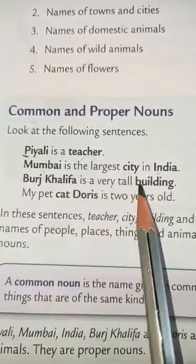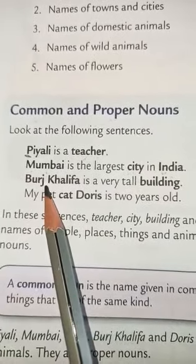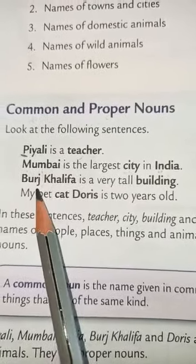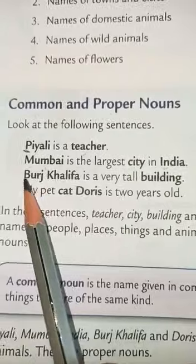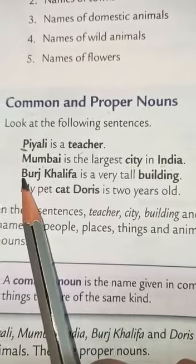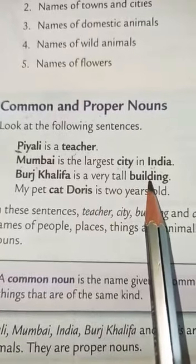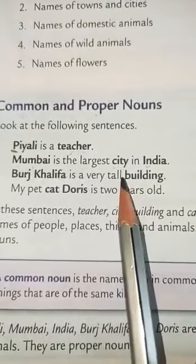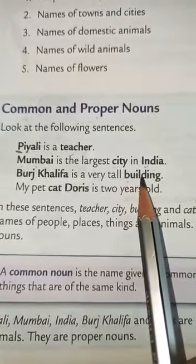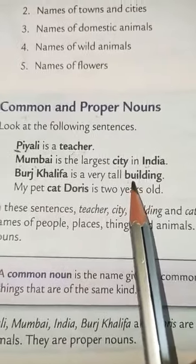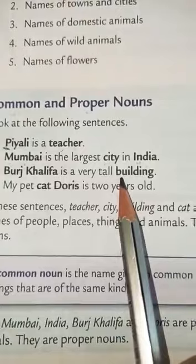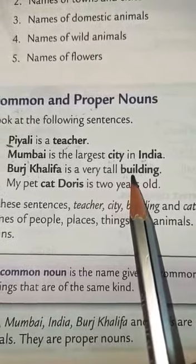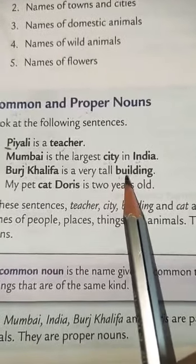Burj Khalifa is a very tall building in Dubai. Burj Khalifa has a specific, unique name written with capital letters, so it is a proper noun. But 'building' is a common word - school building, house building, any building anywhere. We are not specifying which building we mean. So 'building' is a common noun.